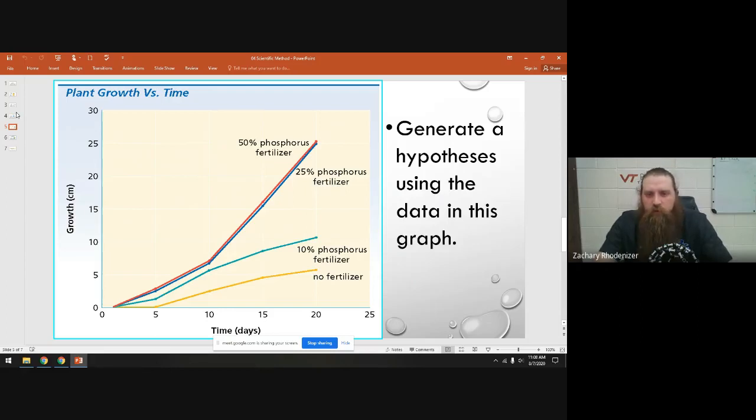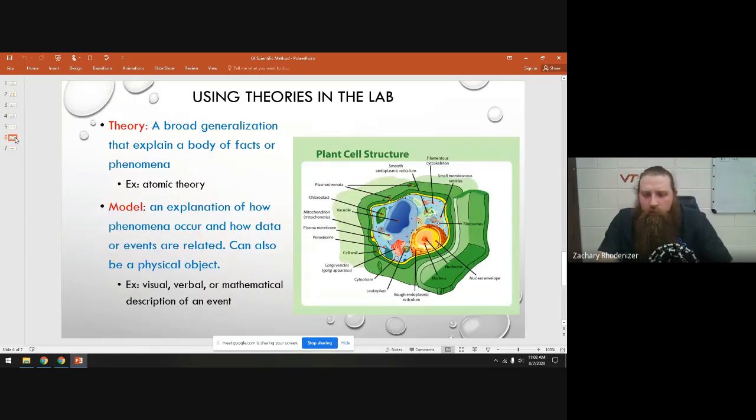Since fertilizer costs money, something that we can pull out of this graph is you're wasting your money if you use more than 25% fertilizer on your crop. So not only do we want the data to identify something about our hypothesis—whether to reject it or whether to accept it—we also want to take it a step further and figure out if we can pull something out of the data that is useful.